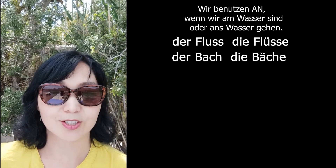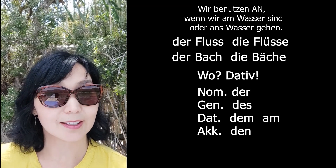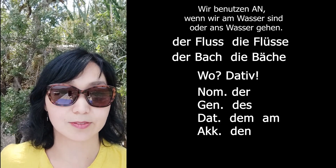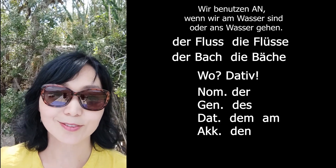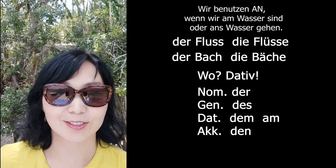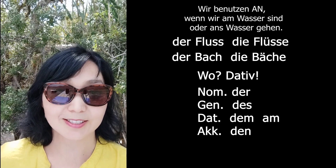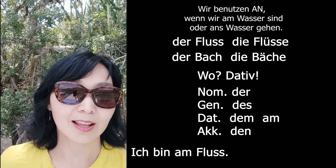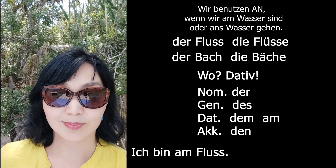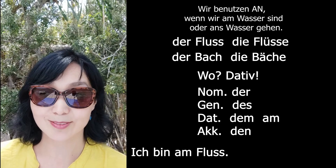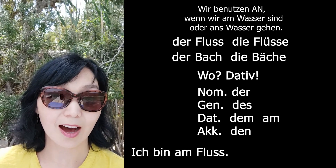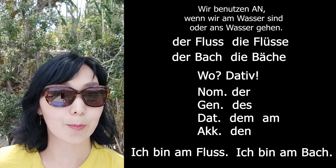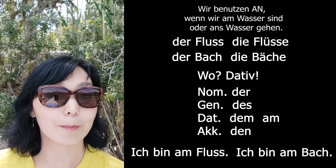И всё точно так же. Если я говорю «где», вопрос у нас 'wo', то нам нужен Dativ. А Dativ мужского рода и Dativ среднего рода совпадают — артикль тот же: dem. И получается: Ich bin am Fluss. — Я у реки. Или Ich bin am Bach. — Я у ручья.